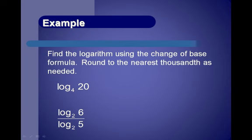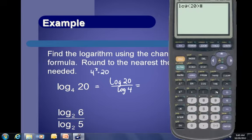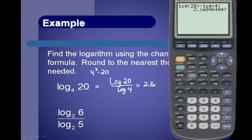Find log_4(20) using the change of base formula, rounding to the nearest thousandth. This asks: 4 to what power equals 20? Since it's not a neat power, we use the calculator: log(20) / log(4). Note: this is division of logs (change of base), not subtraction of logs — those are different operations. Evaluating gives approximately 2.16096, which rounds to 2.161.